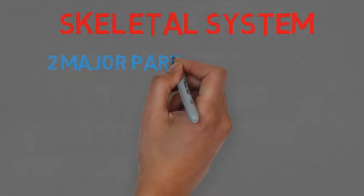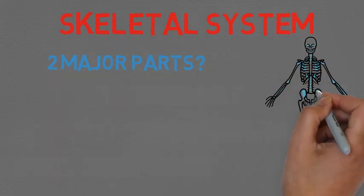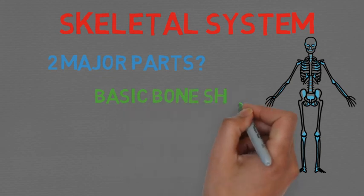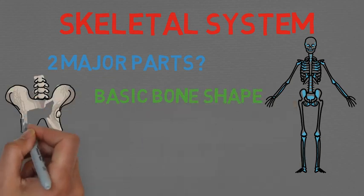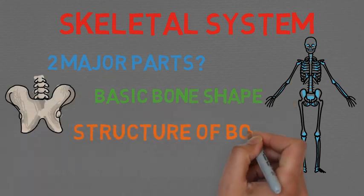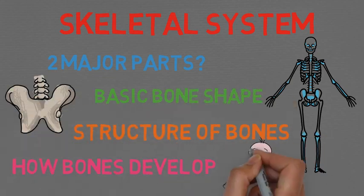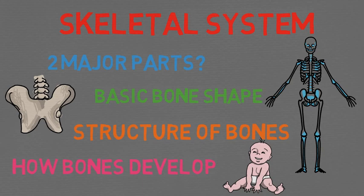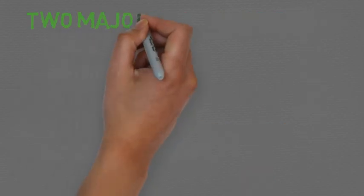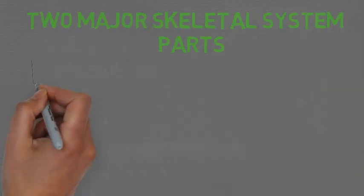Today we are going to dive deeper into the skeletal system, covering the two major skeletal system parts, basic bone shapes, the structure of the bone, and how bones develop over time. We're going to start with the two major skeletal system parts.